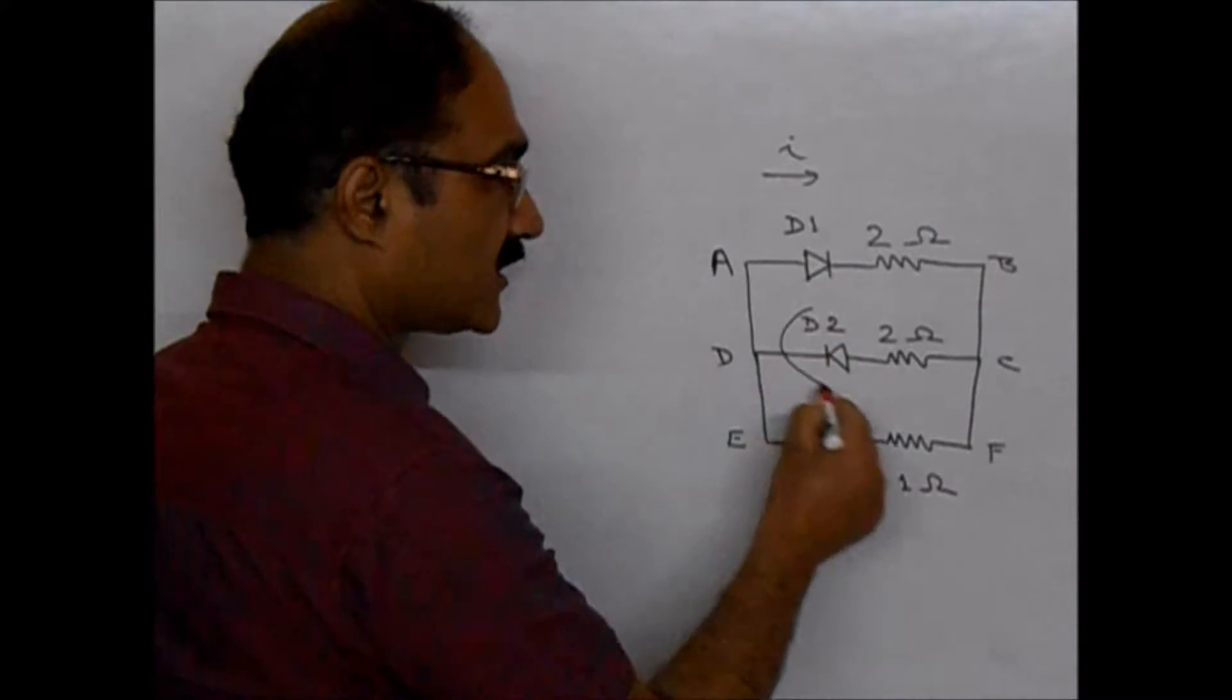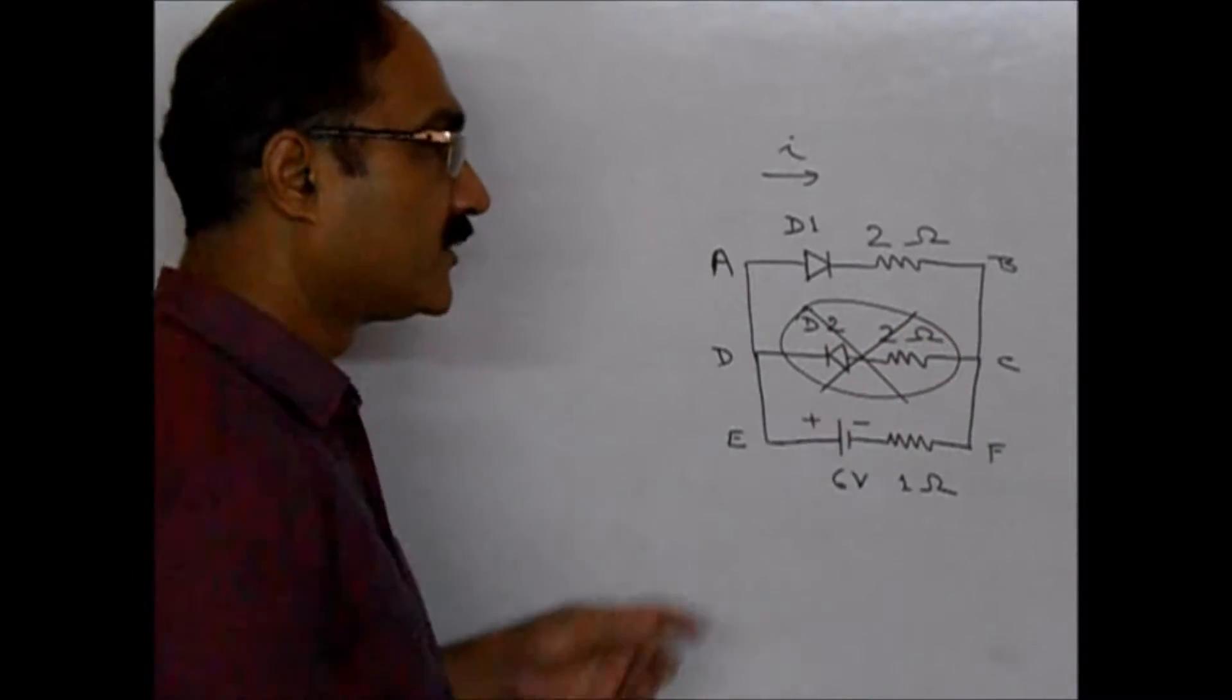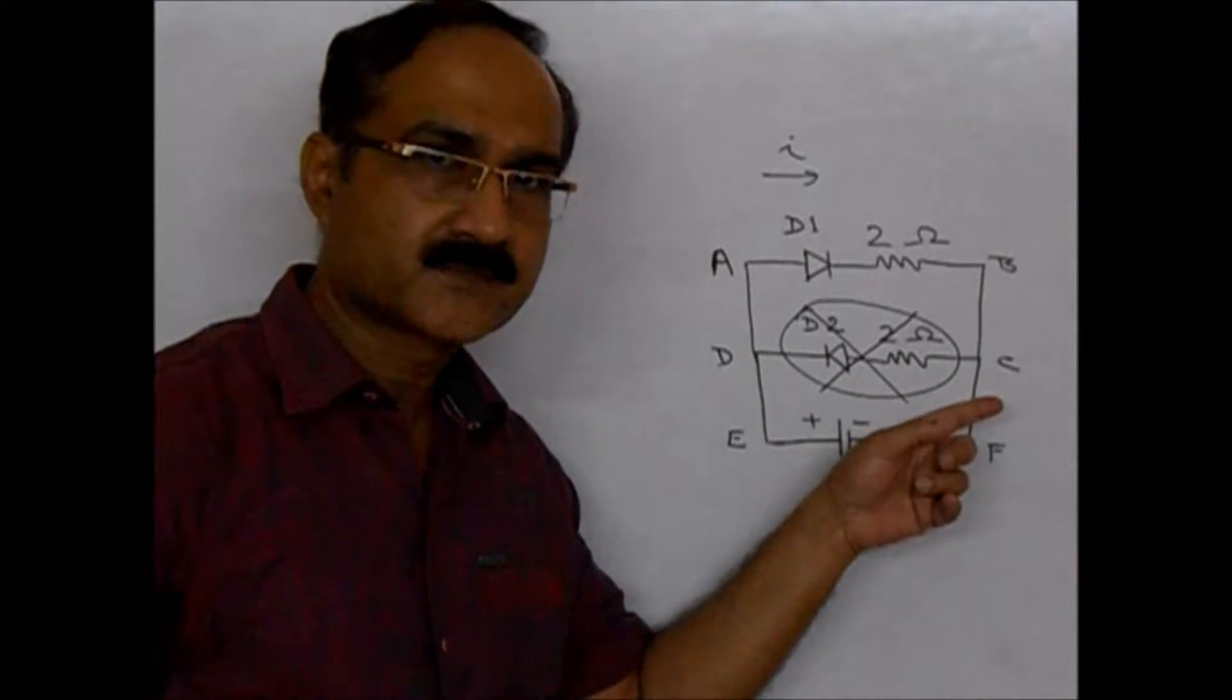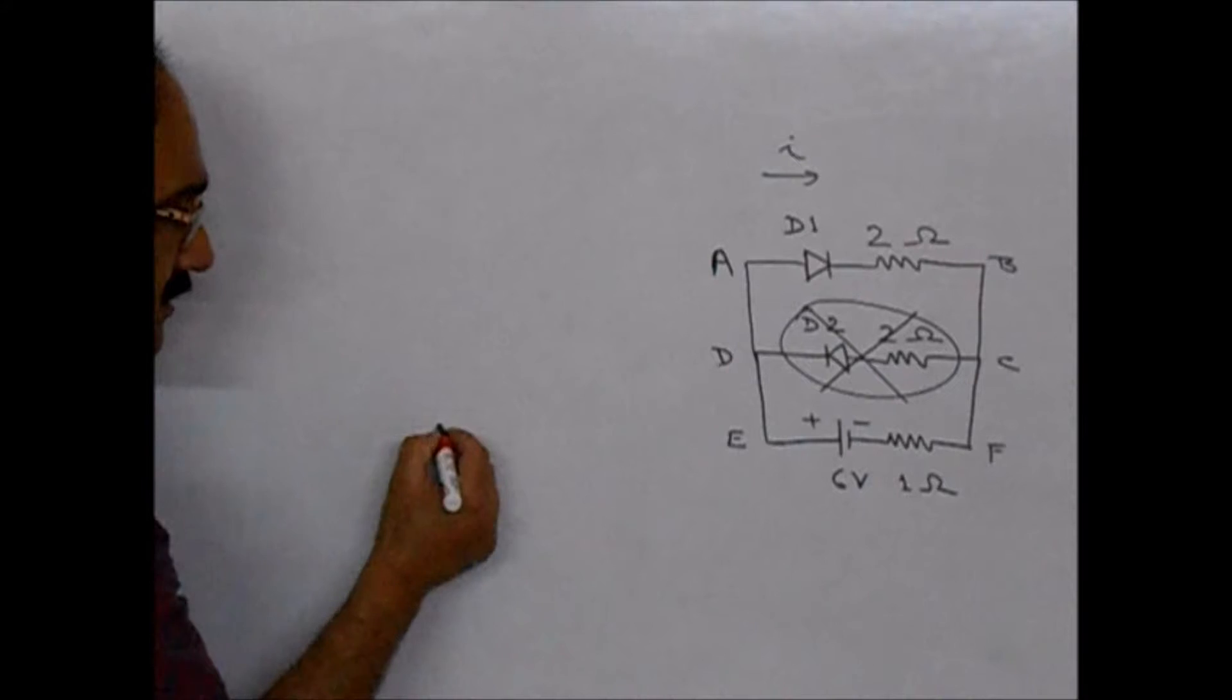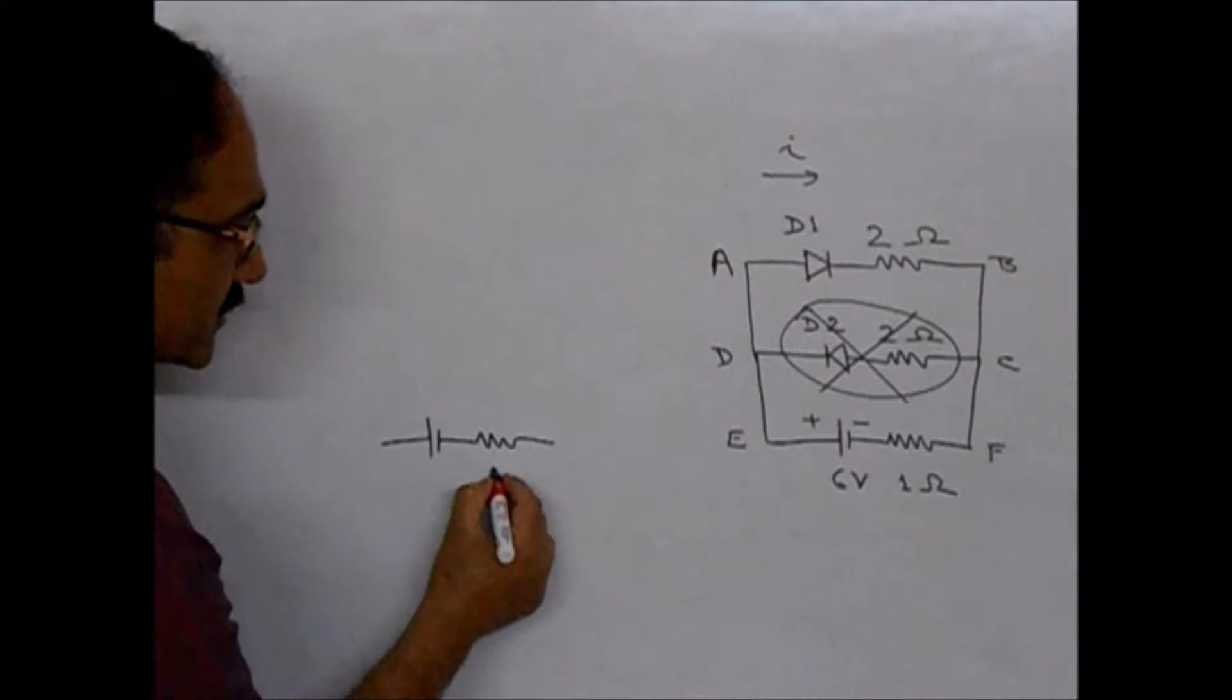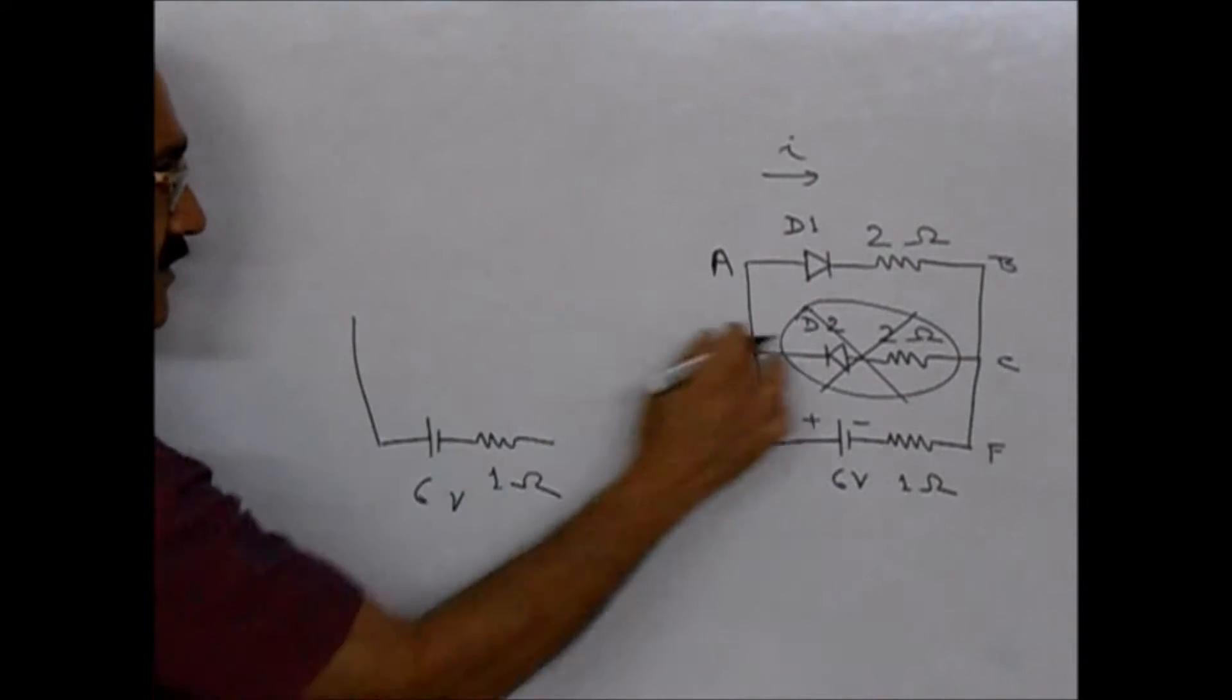So this branch of the circuit, we can cut off because there is no current through this. So the circuit now reduces to this 6-volt cell, the 1-ohm resistor. Then this is not there.